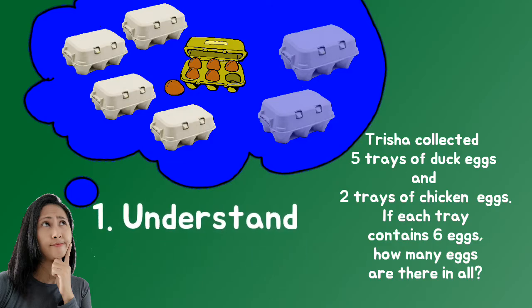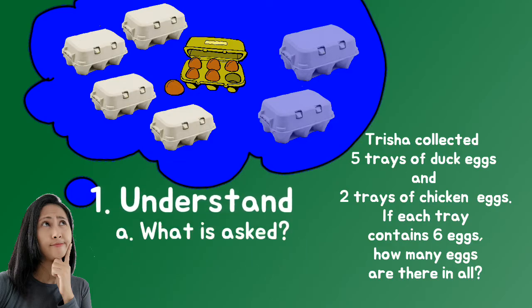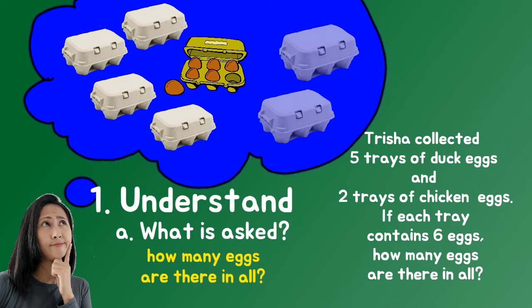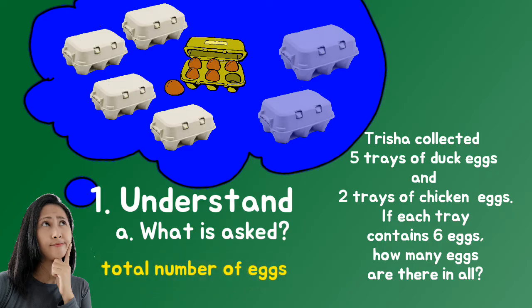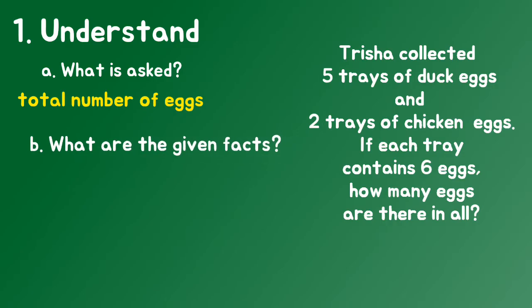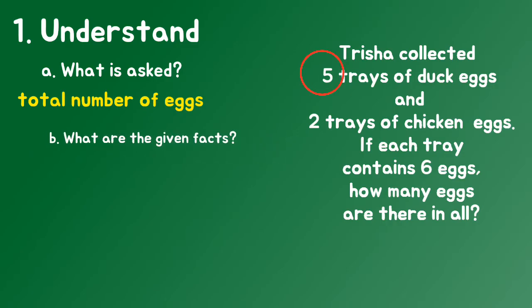Know what is asked in the problem. What are the given facts? Remember, given facts are important numbers in the problem. These numbers are used to solve the problem. Given facts are: five trays of duck eggs, two trays of chicken eggs, and six eggs each tray.